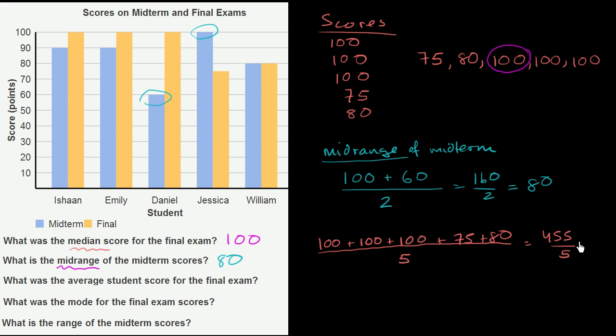Let's see, 5 goes into 450 ninety times and into 5 once. So this equals 91. The average score for the final exam is 91.